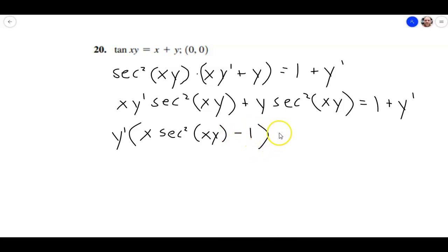And that's equal to, we'll leave the 1 on that side, and we'll take this term here, the y secant squared of xy, and bring it over to the other side. So minus y secant squared of xy.